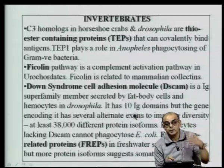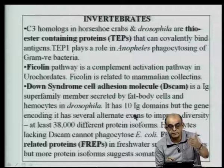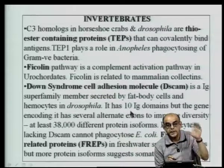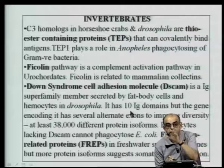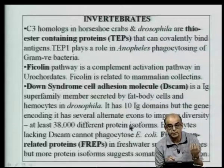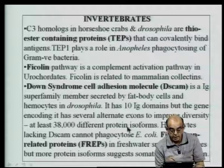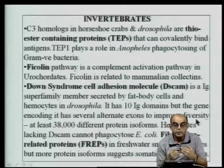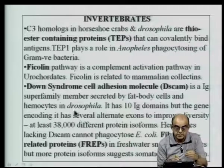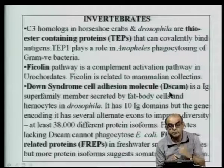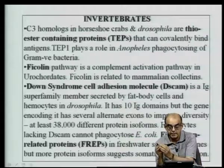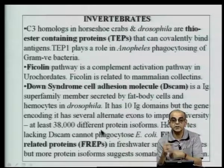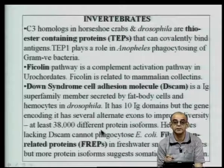Like the immunoglobulin IgG molecule, DSCAM has multiple domains — 10 of them — but the gene encoding it has several alternative exons. Each exon is chosen at random to improve the diversity of the molecule. From a single Drosophila, there are several DSCAM molecules with different alternate exons, resulting in 38,000 different kinds of protein isoforms — something similar to variable gene rearrangement in immunoglobulin molecules, though the mechanism is still not clear.